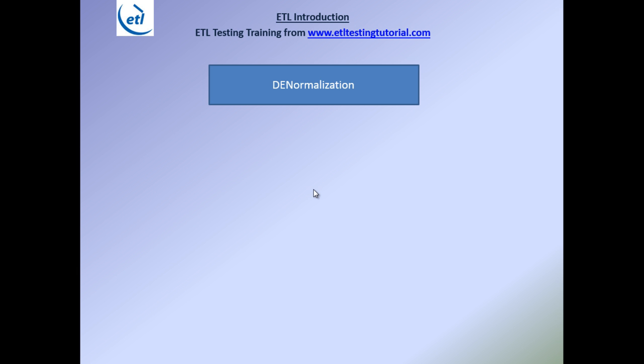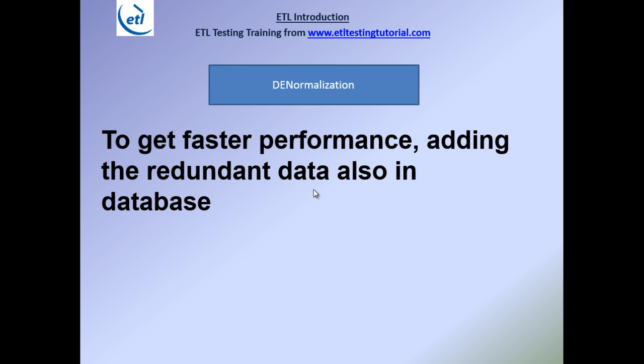With denormalization you don't want to join multiple tables, so you go for a single table. This gives faster performance because the more tables you have, the more joins are needed and the longer the database takes to return results. With denormalization all the information is directly in one table, so you can just select those columns directly — that is obviously faster. We will understand more in depth why denormalization is used in ETL and exactly where it is required.